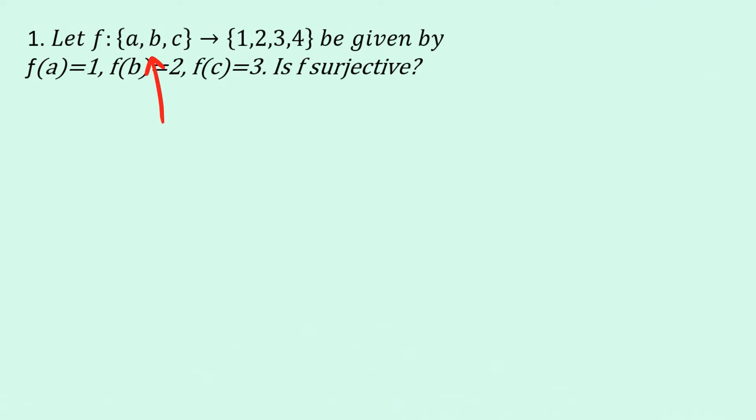So here we have a function f. This set here, a, b, c, this is the domain, and over here one, two, three, four, that is the co-domain. We know that f takes every object in the domain, the a, b, c, and maps it onto some part of the co-domain.